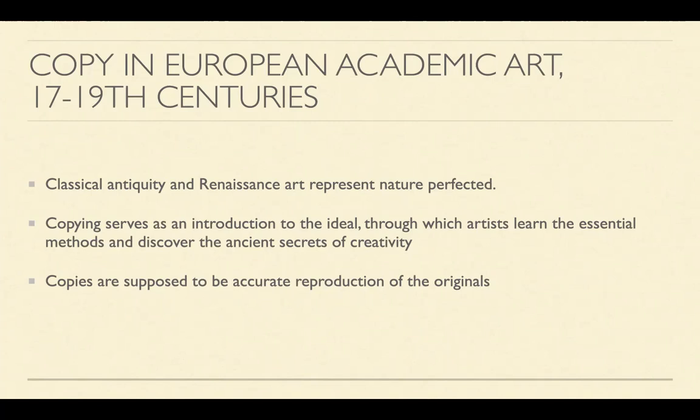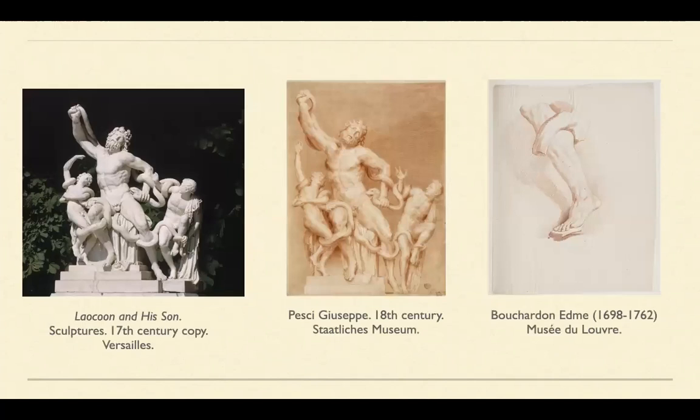One important difference between European and Chinese concepts of copying is that in European academic art discourse, copies are supposed to be accurate reproductions of the originals, which is different from the Chinese concept. For example, a great sculpture, Laocoon and his sons, was copied in the 17th century as an exact copy in sculpture. Another artist from the 18th century also copied exactly the same sculpture in drawing, and other artists copied just part of the body to learn how to express intense emotions from the muscles.